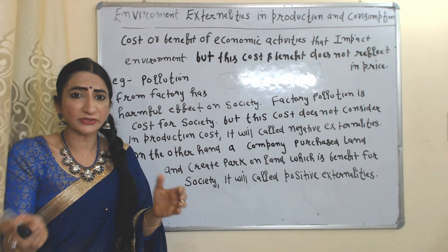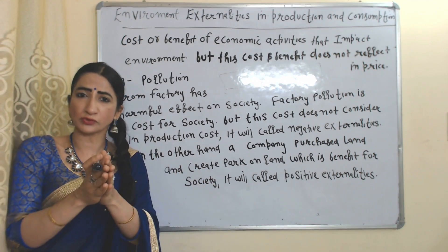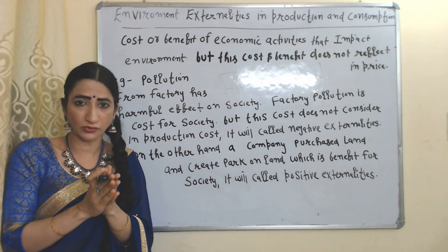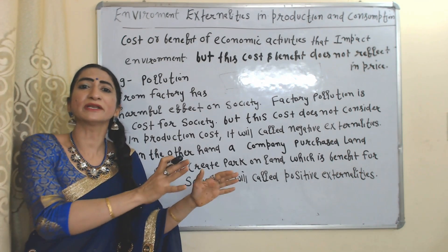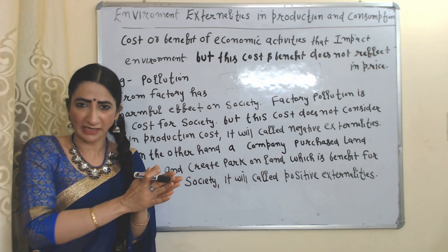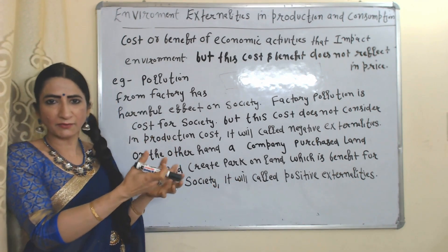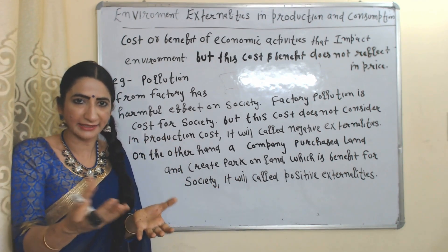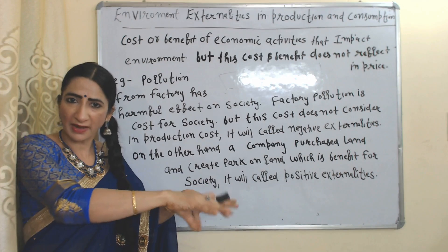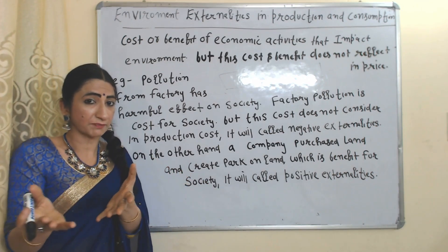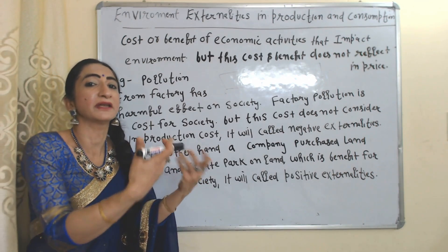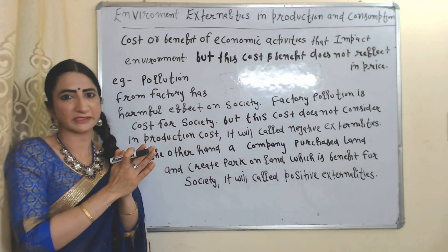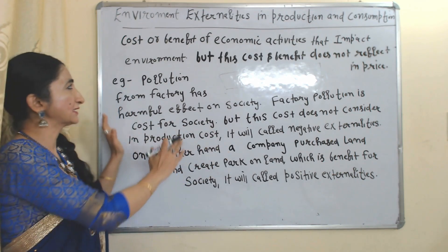For example, pollution from a factory creates harmful effects on society. We can say the factory pollution is a cost for society, but this cost is not included in the cost of production, so it will be called negative externality. On the other hand, when a company purchases land and creates a park, this park gives benefit to society — it will be called positive externality.